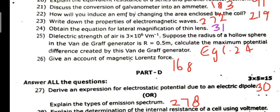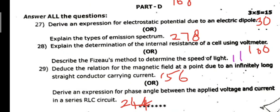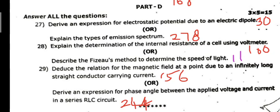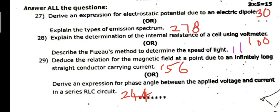23rd: Write down the properties of electromagnetic waves, page 272. 24th question: Obtain the equation for lateral magnification thin lens, page 31, second volume. 25th: Sum example 1.24, I will explain later. 26th question: Give an account of magnetic Lorentz force, page 168. Next five marks important question: 27th - Electrostatic potential due to electric dipole, page 30, or types of emission spectrum, page 278.